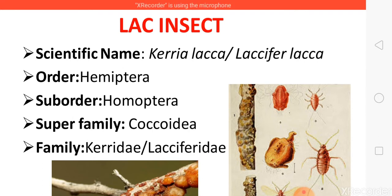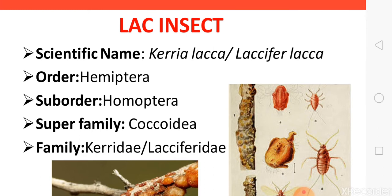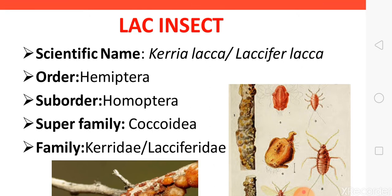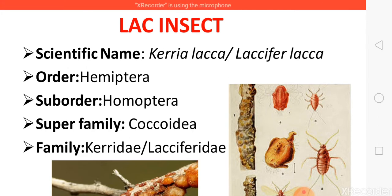First of all, we should know the geological name of lac insects. Here I have mentioned two genus: Caria and Lassifer. Caria genus has many species, but here I have mentioned Caria laica. Genus Caria is commercially more important than Lassifer laica in the production of lac. Caria laica is a native of Asia, with species like Caria Nepalese and Caria chinensis from different native places. It comes under order Hemiptera and sub-order Homoptera, superfamily Cocadiai, family Caradiai and Lassiferidae. Of both genus Caria and Lassifer, Caria is commercially more important.